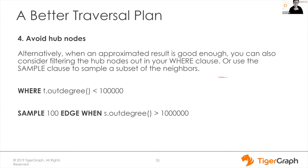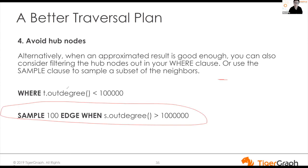Other strategies for hub nodes: sometimes going through hub nodes makes your result less accurate. If you don't need 100% precision, you can use a SAMPLE clause to sample some edges from the hub node. For entity resolution, using a hub node — like an email shared by a million people — is noise in the graph; you can exclude it with a WHERE clause filtering on degree greater than some threshold like 100K, or use sampling for less accurate but faster results.